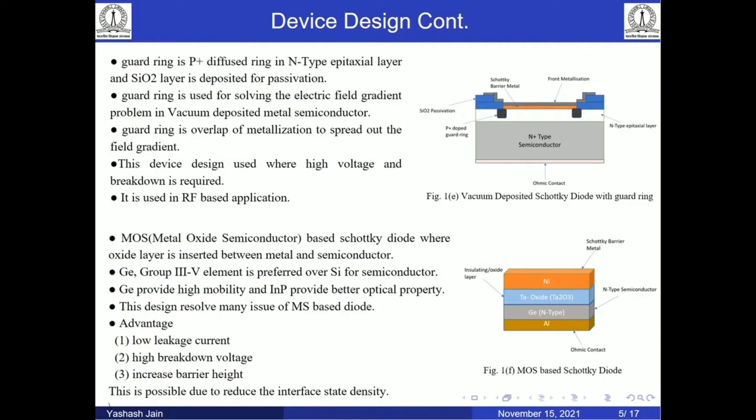To solve the vacuum deposited metal-based Schottky diode problem, researchers came up with the idea of a guard ring, where a P-plus doped guard ring was diffused into the N-type epitaxial layer. This solved the problem of electric field gradients. The guard ring overlaps the metallization to spread out the field gradients, so this device can be used for applications requiring higher breakdown voltage and high voltage, like RF-based applications.